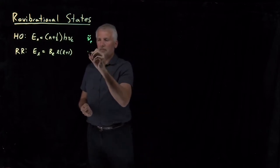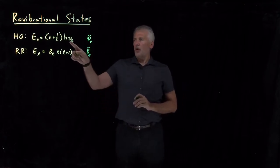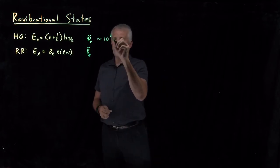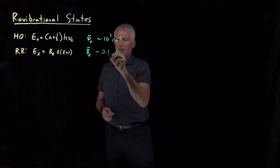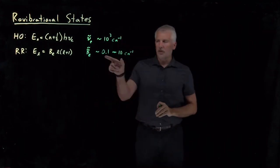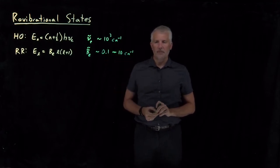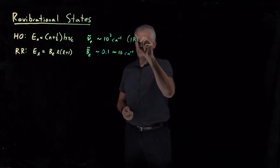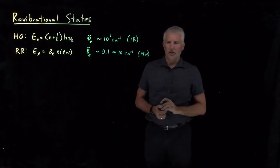If we convert both of those to the same units — units of wave numbers — the fundamental vibrational frequency is typically on the order of several thousand inverse centimeters, whereas the rotational constant is somewhere in the vicinity of a few tenths or maybe a few tens of inverse centimeters. So the rotational constant is smaller by at least a couple of orders of magnitude compared to the vibrational energy. Vibrational photons that excite vibrational excitations are in the infrared, while photons that excite rotational excitations are in the microwave.